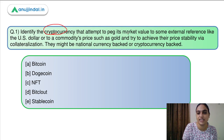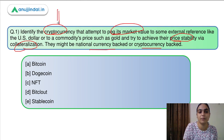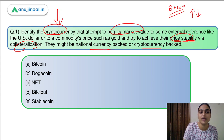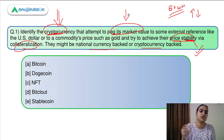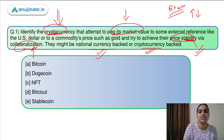The first question asks you to identify the cryptocurrency that attempts to peg its market value to some external reference like the US dollar or commodity prices such as gold, and tries to achieve price stability via collateralization. They might be national currency-backed or cryptocurrency-backed. They are asking about a type of cryptocurrency which is more stable. Bitcoin is quite unstable — its value keeps fluctuating with a lot of volatility. We have to identify the cryptocurrency which is not that volatile, which is stable because it's pegged to some other currency or commodity price and has collateralization backing it. The answer is stablecoins — option E.